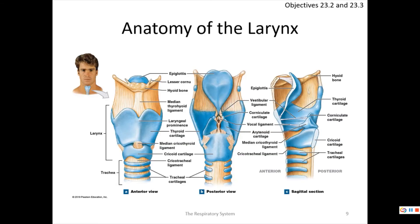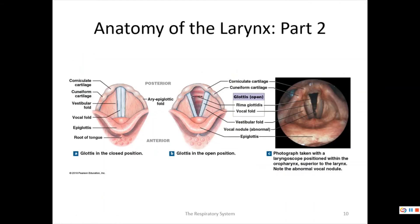A laryngoscopy image shows the interior of the larynx, where you can identify the cuneiform cartilages. The corniculate and arytenoid cartilages are not as clearly visible in this view. These structures will be examined further in the lab.